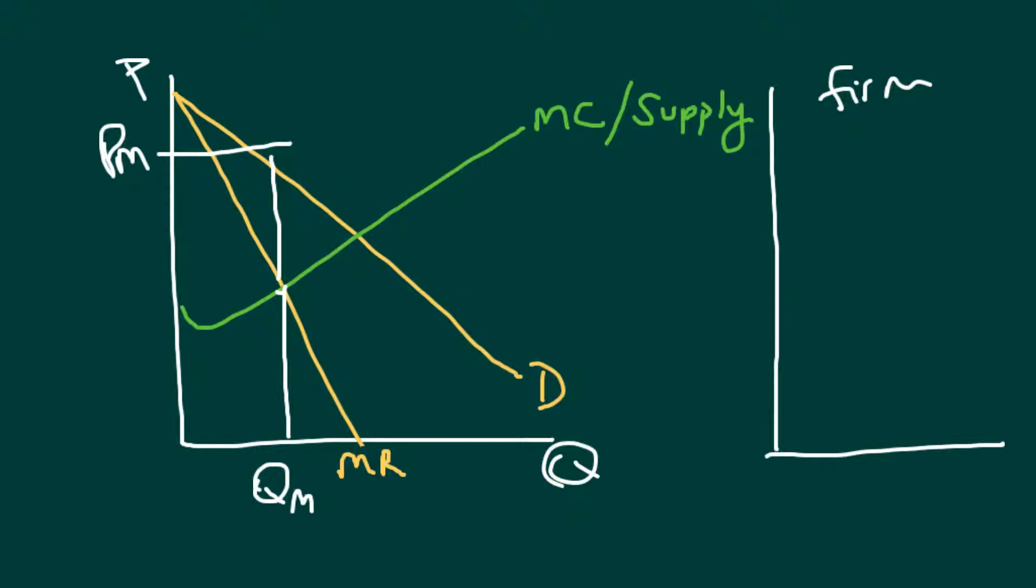If we think about perfect competition, what we would say is, okay, here's your demand curve for the market. Remember, this is a demand curve for the market and the firm for a monopolist. But for perfect competition, it's the demand curve for the market. This would be our supply curve of the market. And then that determines the thing we're used to seeing over here. The price equals the demand curve equals the marginal revenue, right?